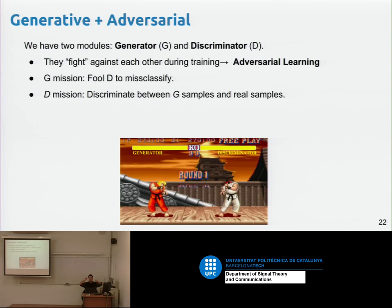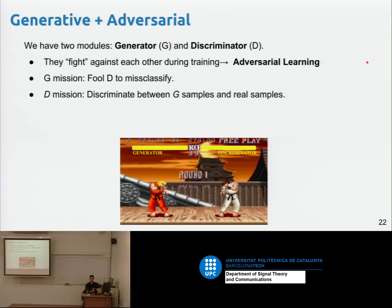We can apply adversarial learning even without a generative component, though we're not covering that here. Another branch is adversarial examples, which deals with robustness of machine learning by tricking models to fail. Adversarial learning opened many branches of possibilities, but we're focusing on how we apply this to generative modeling — that's GANs: generative and adversarial.